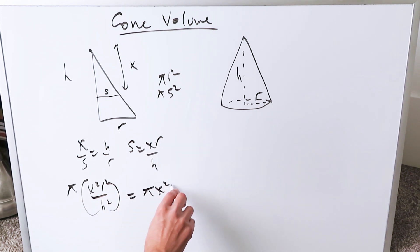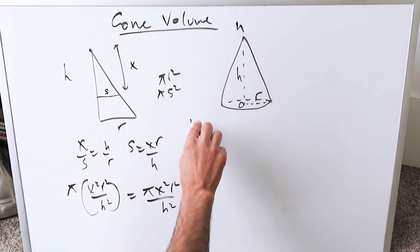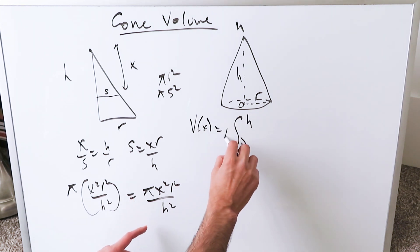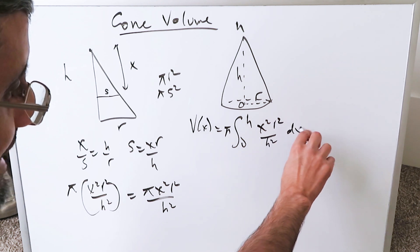You're going to have πx²r²/h², which will now integrate from a lower limit 0 to an upper limit h. Volume with respect to x is going to be 0 to h. Push the π out. You will integrate x²r²/h² dx.